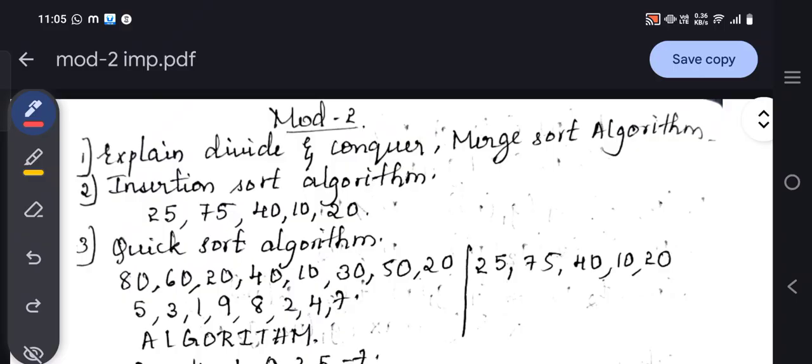So let's see how it goes. The first question is divide and conquer. This is the fixed question from Module 2. If you don't study this, you are almost losing 10 marks. The question is to explain divide and conquer. Basically, in divide and conquer we have merge sort, insertion sort, and quick sort. Among these three, any of the sorting techniques they can ask.